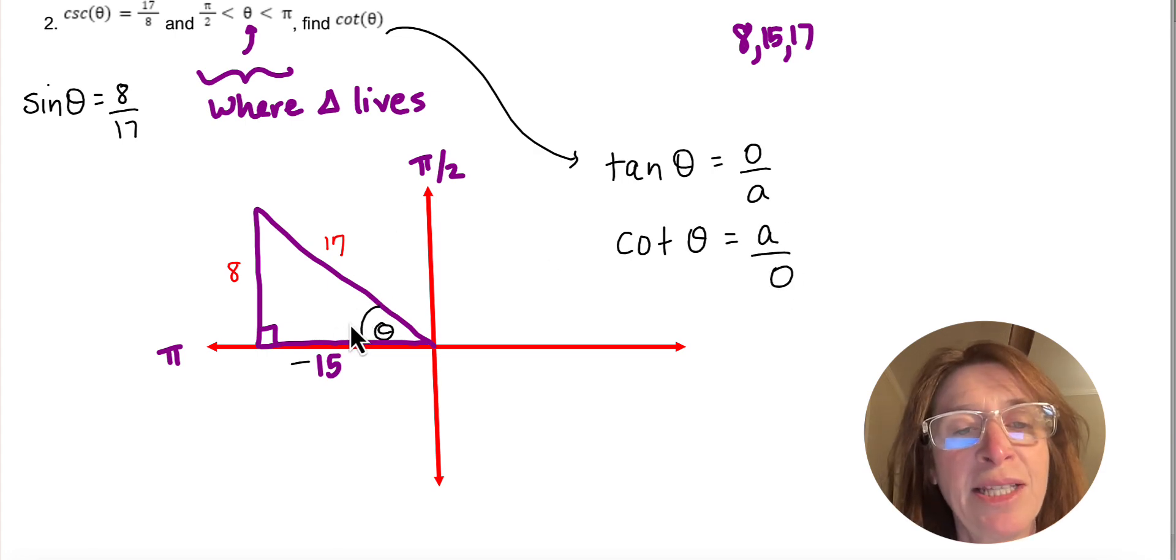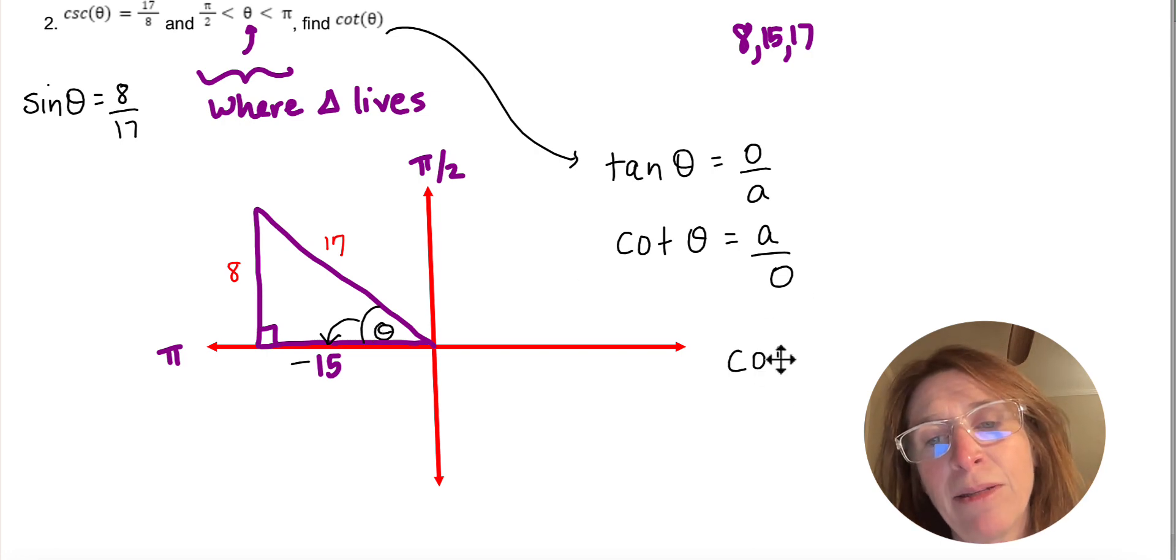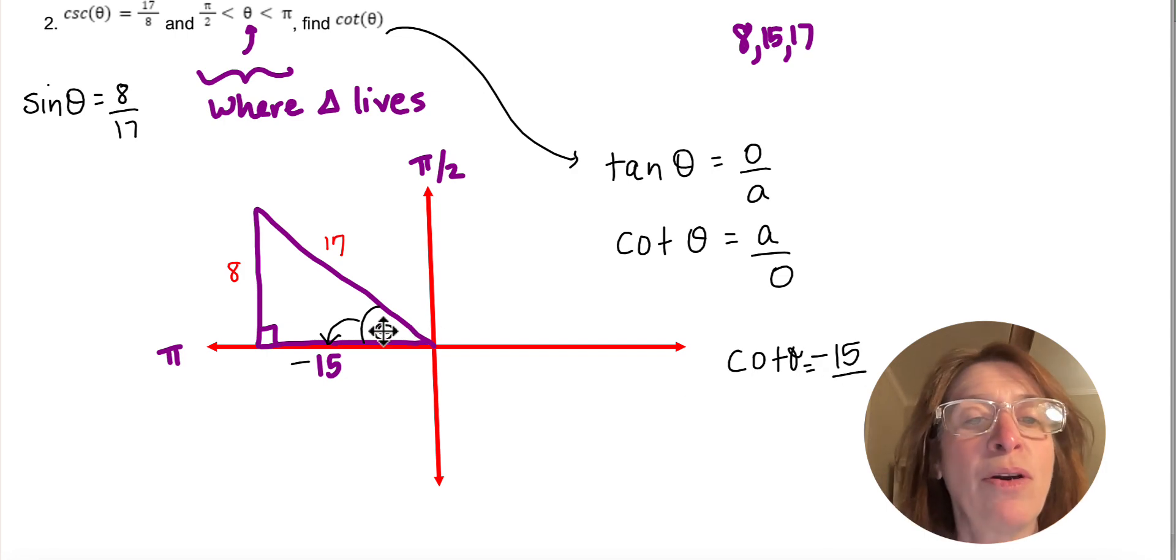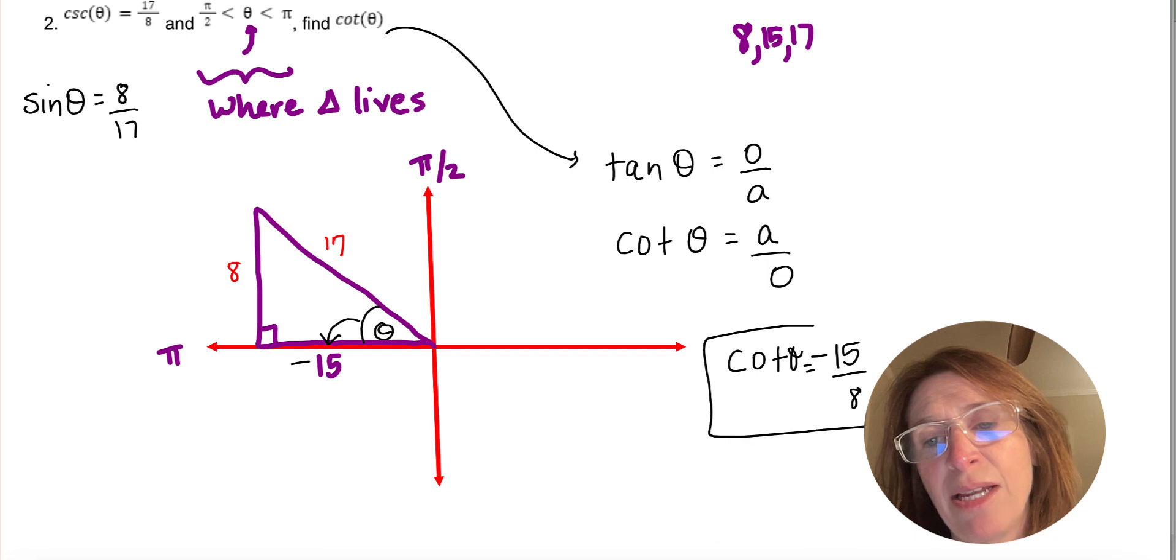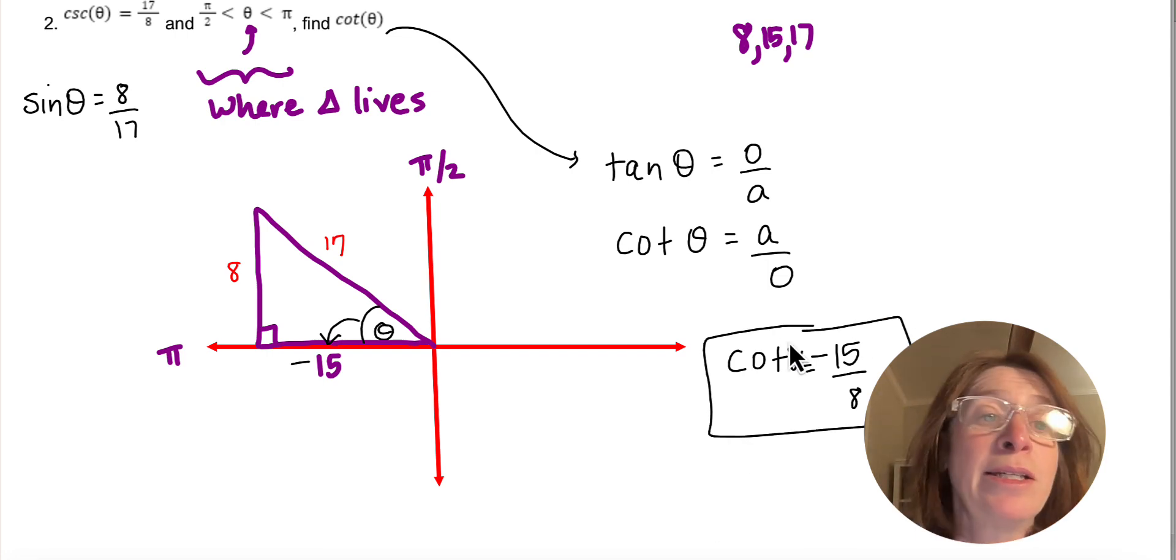So adjacent to theta is right here, so negative 15. So cotangent theta equals negative 15 over opposite which would be 8. And so cotangent theta is negative 15 over 8, and that's basically how you solve these basic trig equations.